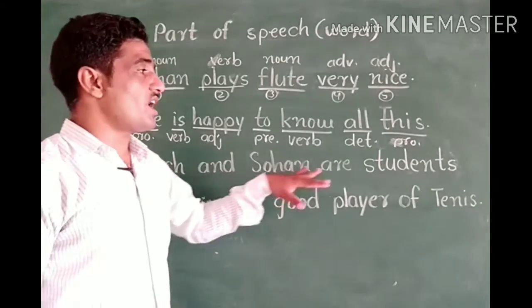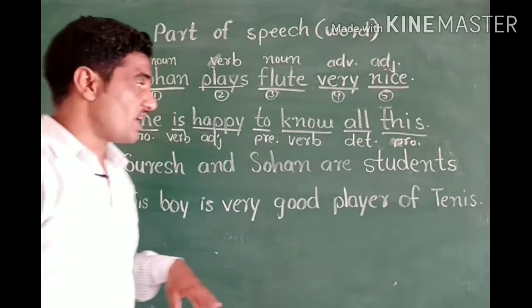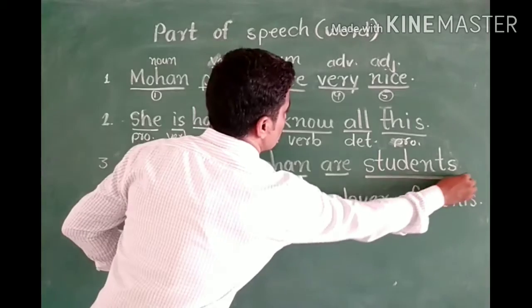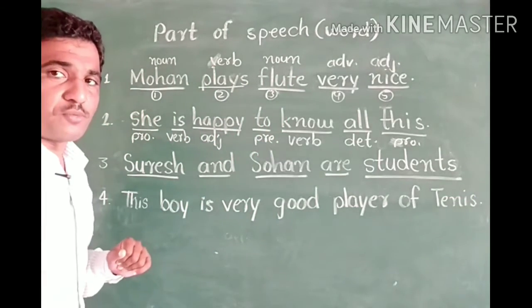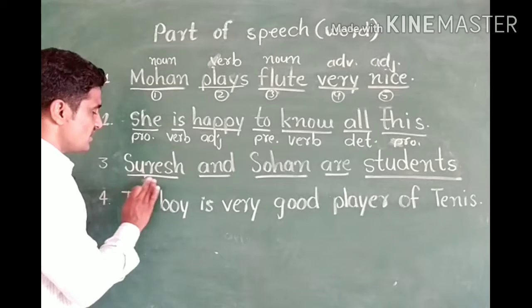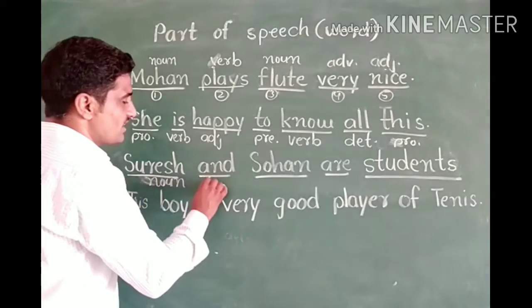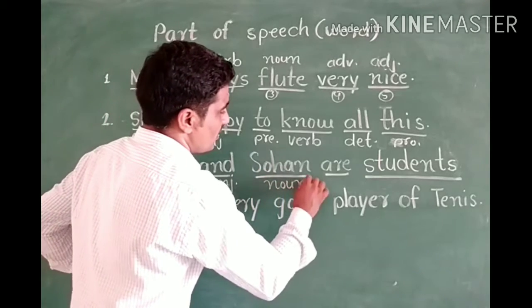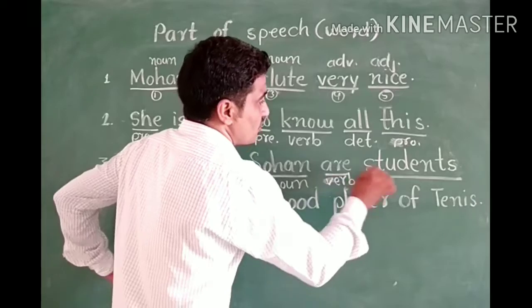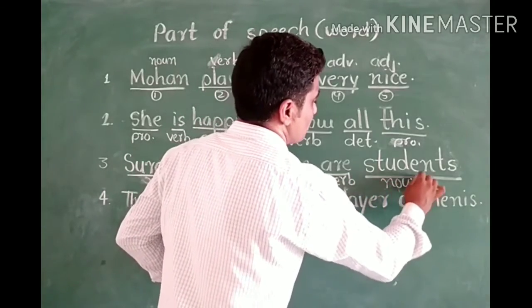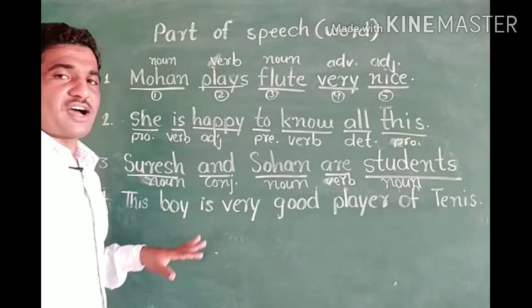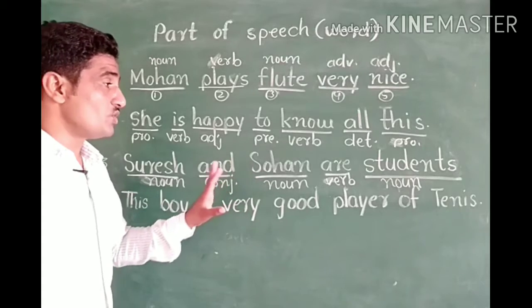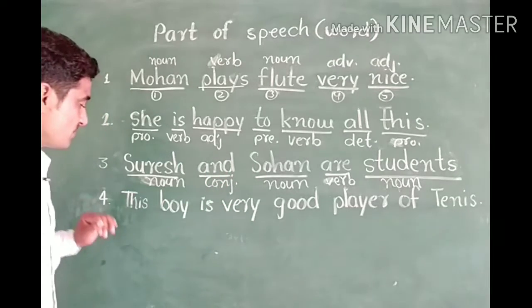Next: 'Suresh and Shoghan are students.' These are the five parts of this speech. Suresh is a noun. And is the conjunction. Shoghan is also a noun. Are is a verb. Students is the noun. So these five words are the parts of speech and they are also different types of words.